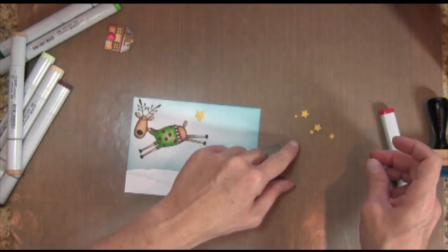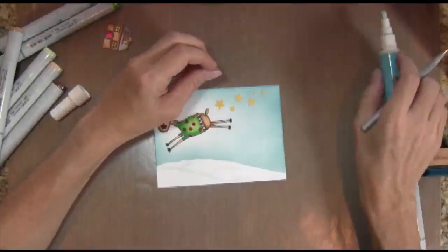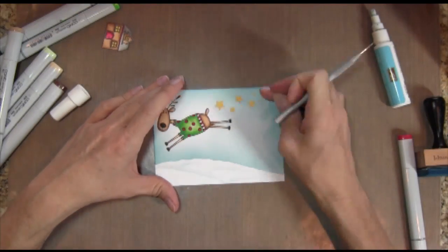All right, so this is the star punch that I used on my Christmas card this year, and now I'm just placing them in there, and I'm going to use my two-way glue pen to adhere them to the card.